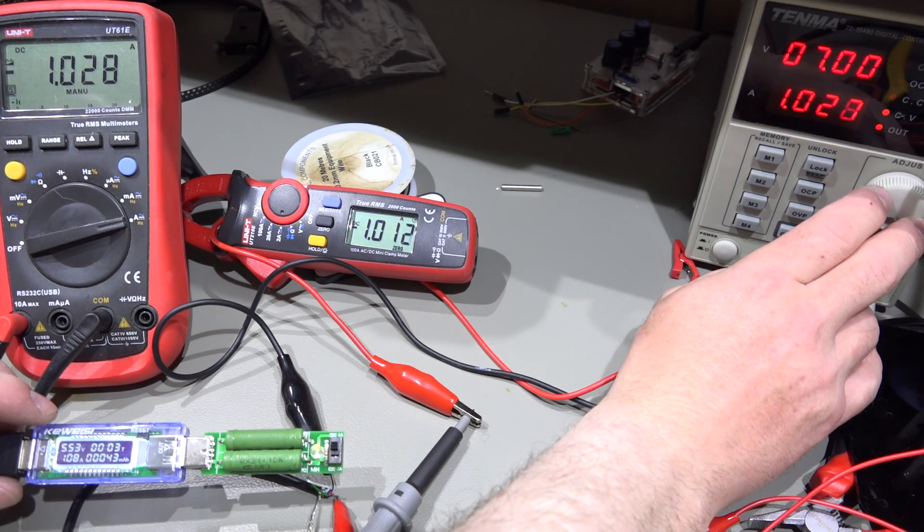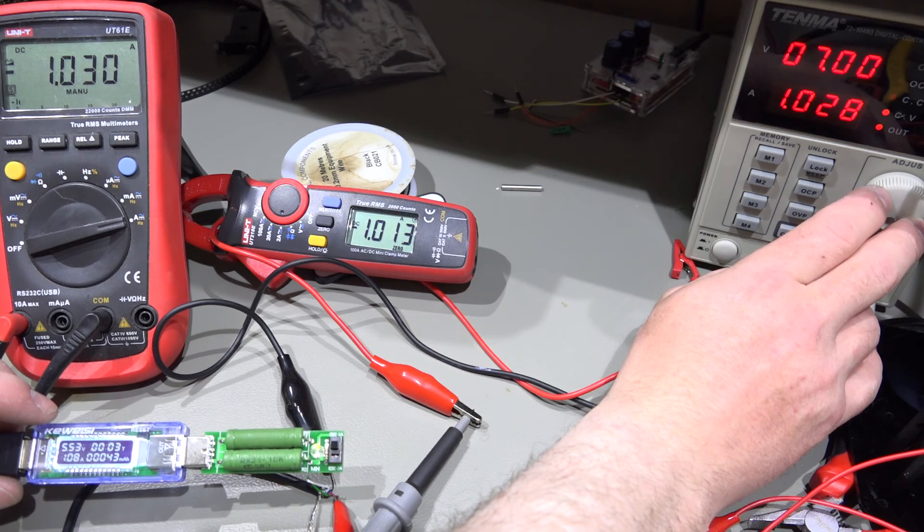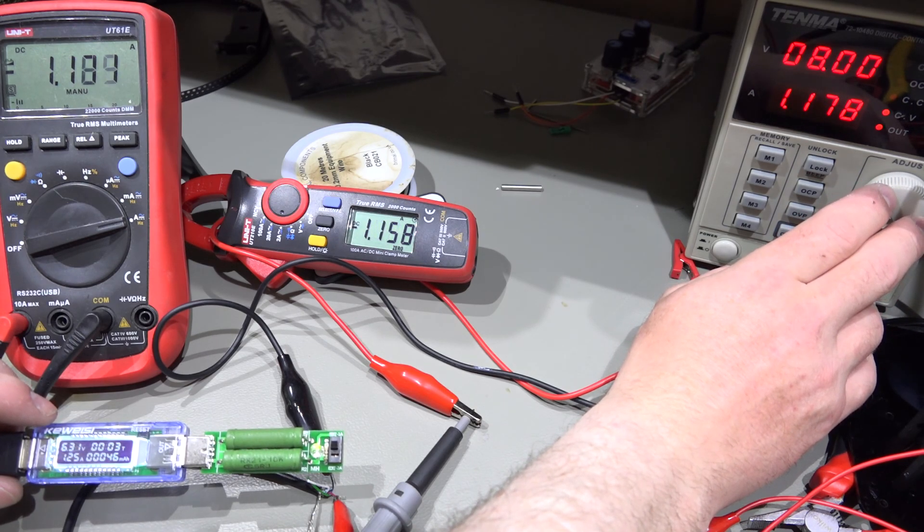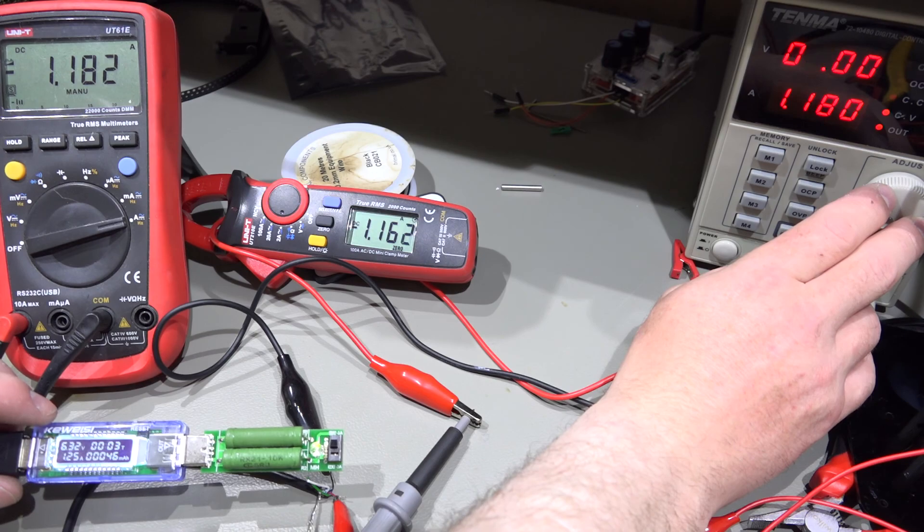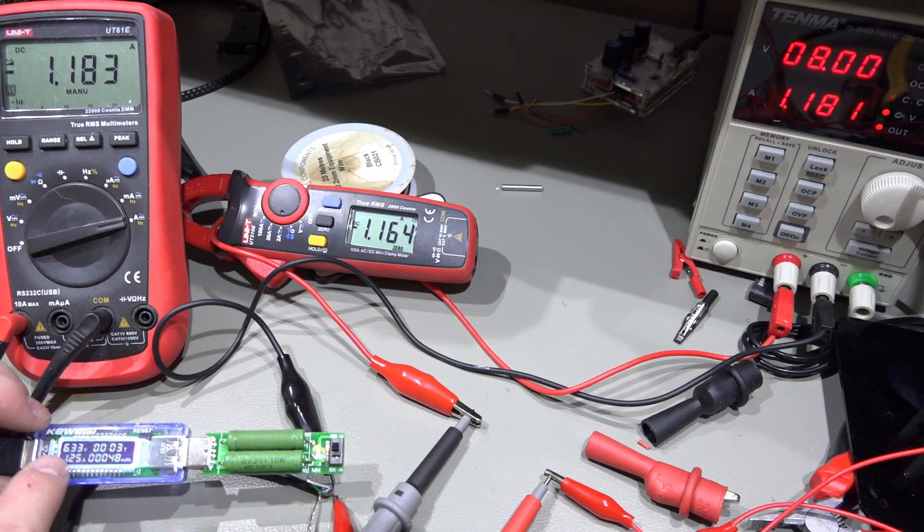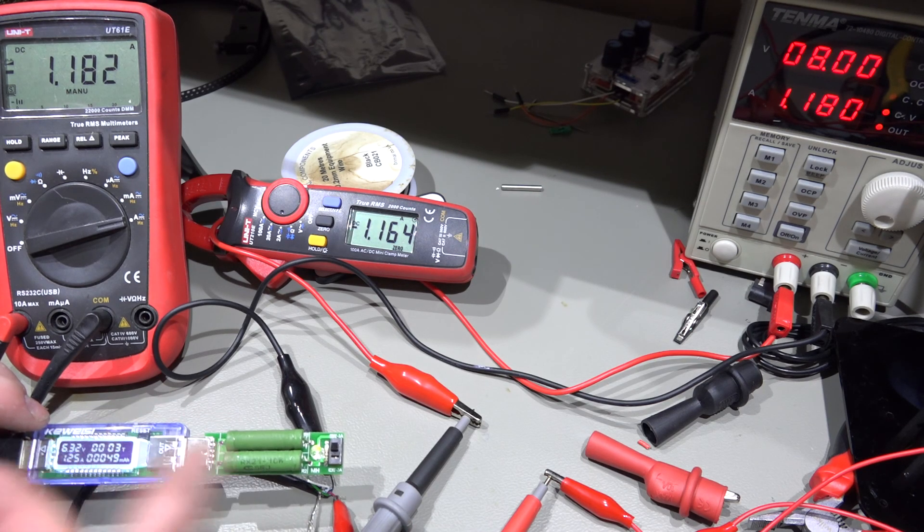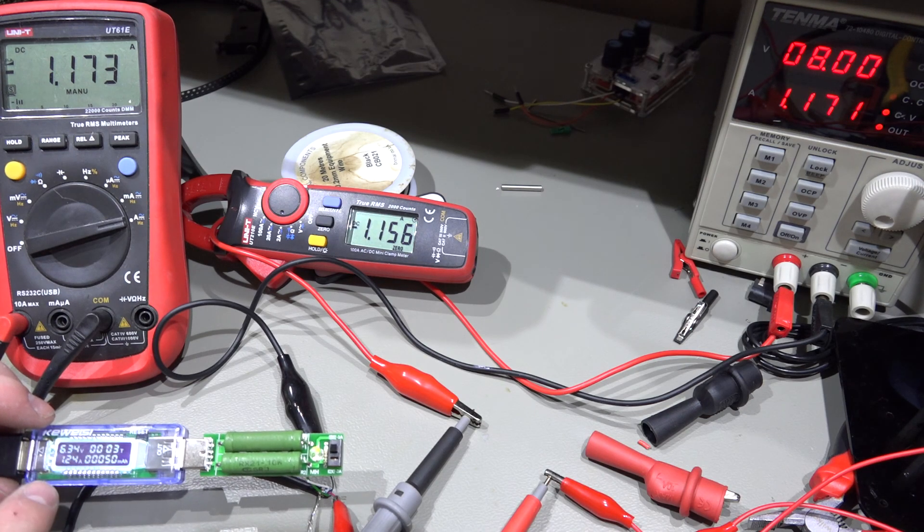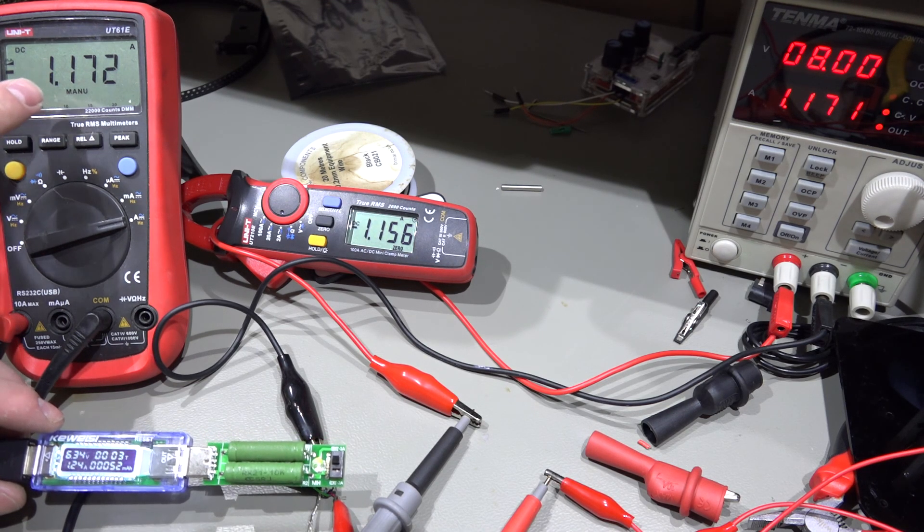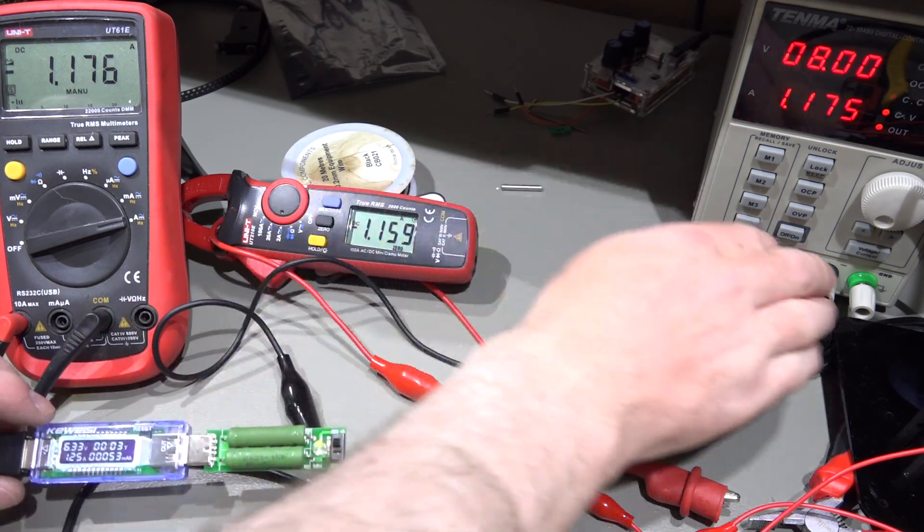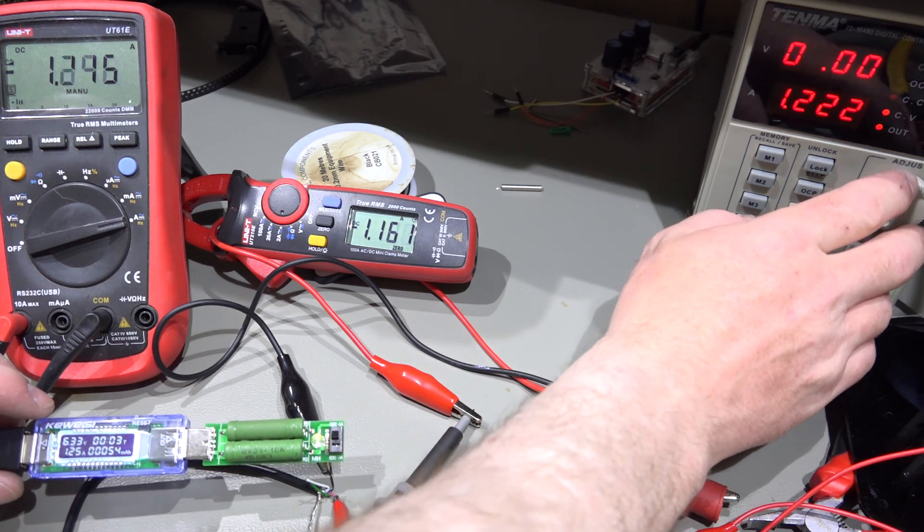1.08 amps, got 1.03, 1.01 on the clamp meter there. 8 volts, 1.25 amps on here. You can see here the voltage dropped down to 6.33, that's saying it's still supplying 8 and I expect it is. I expect we may be having issues now with this actually reading the voltage. We've got 1.17 on there and 1.15 on that one. So we can go one step higher to 9 volts.